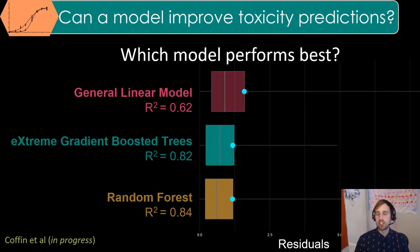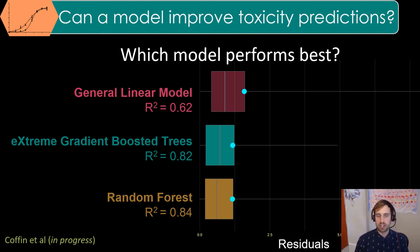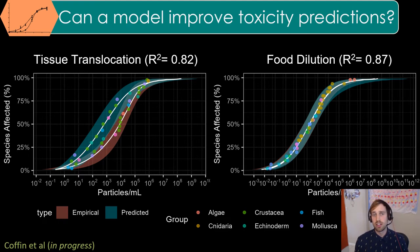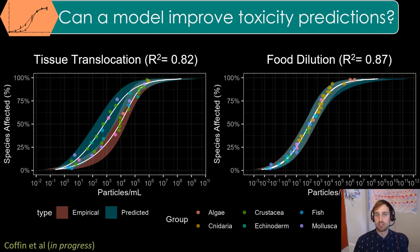Finally, we asked if a machine learning model can accurately predict effect concentrations for microplastics. We tested multiple models, and a few are shown here. We found that a random forest model performed the best of the models we tested for predicting exposure effect concentrations, with an R-squared of 0.84 compared to a general linear model having an R-squared of 0.62. We used this random forest model to predict effect concentrations for tissue translocation and food dilution ecologically aligned relevant metrics. The empirical species sensitivity distribution is shown in red, with the model predicted distribution shown in blue. For tissue translocation, the model was less accurate in predicting exposure concentrations than the food dilution model, having an R-squared of 0.87 relative to 0.82 for tissue translocation.